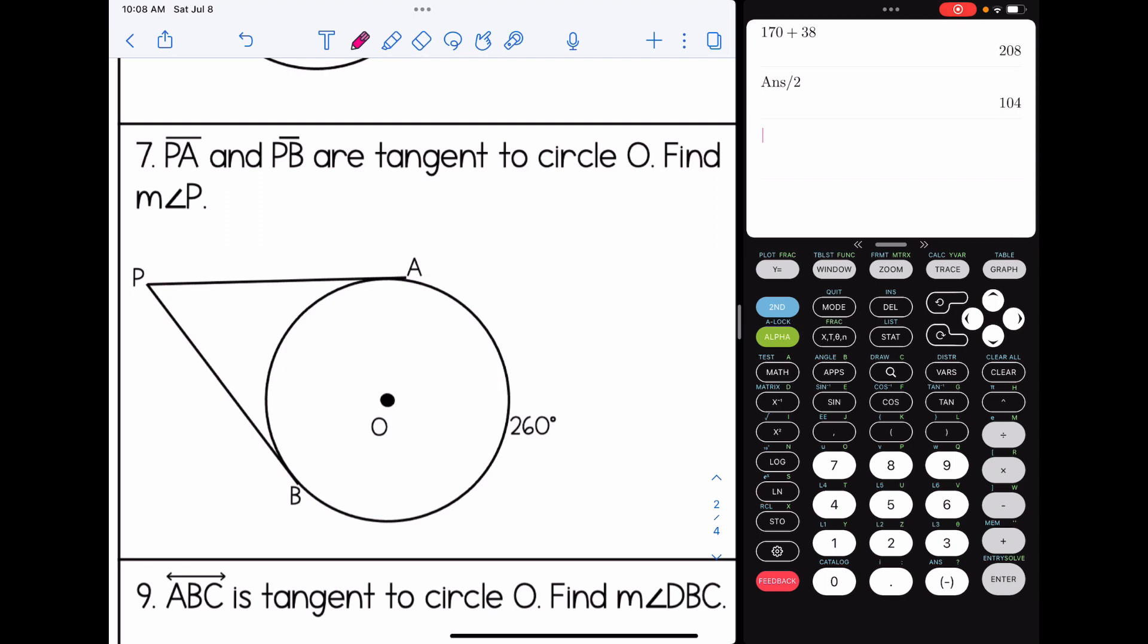Number seven, PA and PB are tangent to circle O. Find the measure of angle P. Here's angle P. The vertex is outside the circle. So I know I need to subtract the arcs. So I might look at this and say, okay, 260 minus something divide by two. But I might stop for a second and say, wait a minute, I don't know the measure of this arc. Well, we know a whole circle is 360 degrees. So this arc must be 100 degrees then in order for this to add up to 360 degrees. So if I subtract 260 minus 100 divided by two, this is a good example that not all pictures are drawn to scale, by the way, the measure of angle P is 80 degrees.